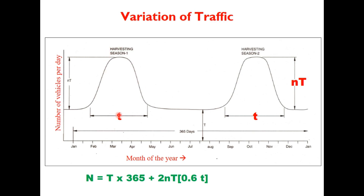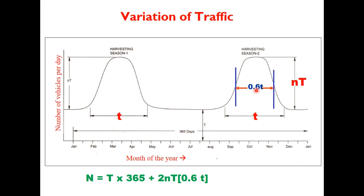Traffic on rural roads is not constant throughout the year — there are harvesting seasons during which traffic is very high. If capital T is the number of vehicles per day during the lean period, and there are two or three harvesting seasons each of duration small t, with traffic during harvesting being n times the lean traffic, then the traffic builds up over about 40% of time t to reach peak, the peak remains for 20% of time, and then falls back. So the effective harvesting season traffic duration is 0.6 times t.